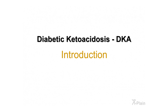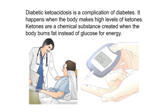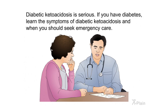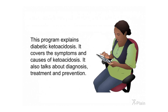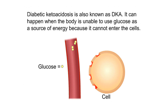Diabetic ketoacidosis (DKA) introduction. Diabetic ketoacidosis is a complication of diabetes. It happens when the body makes high levels of ketones. Ketones are a chemical substance created when the body burns fat instead of glucose for energy. If you have diabetes, learn the symptoms of diabetic ketoacidosis and when you should seek emergency care. This program covers the symptoms, causes, diagnosis, treatment, and prevention of diabetic ketoacidosis.